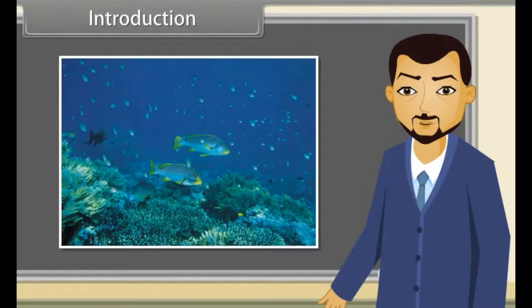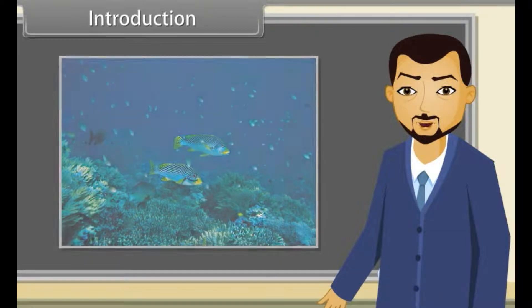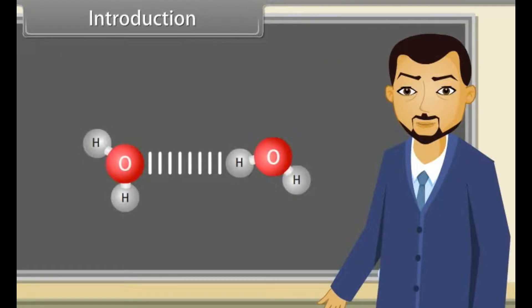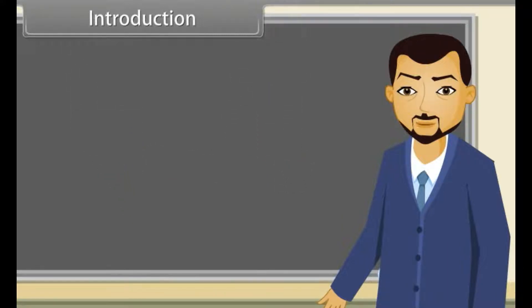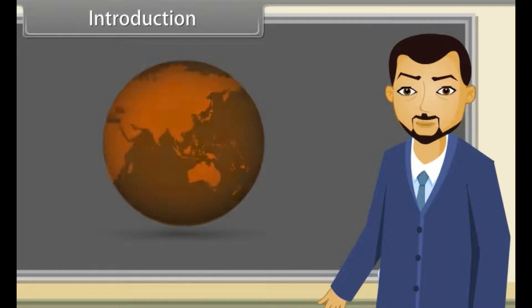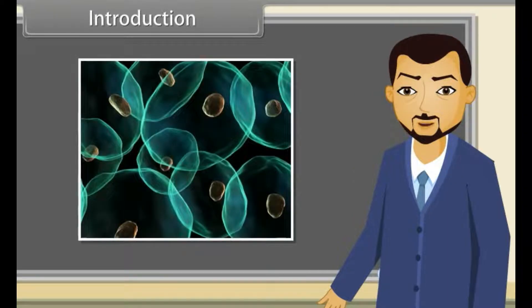Life depends upon hydrogen bonding. Life is created from water, and water is a liquid due to hydrogen bonding in its molecules. If there is no hydrogen bonding, then water would be a gas just like air. There would be no oceans, no lakes, and no rivers. The fluids in cells of living bodies also exist due to hydrogen bonding, so all the living systems depend upon hydrogen bonding.